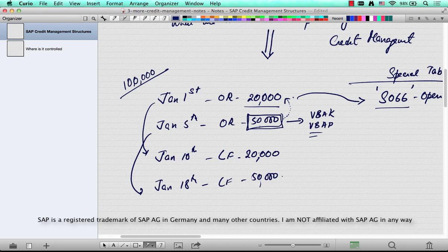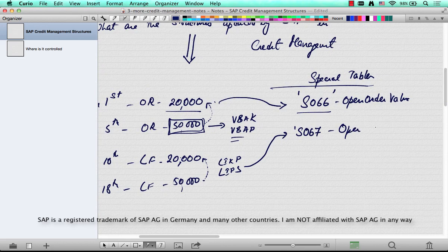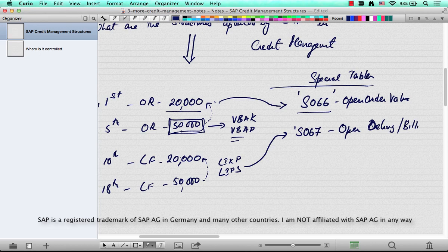Now at this time during the delivery creation, the system has to understand that there is $20,000 worth of goods that have already left the warehouse, and that's not available in your delivery headers or delivery item tables. So where is this stored? This is stored in another table called S067, and this table contains the open order, so open delivery and billing values. So how much has been delivered, how much has been billed.